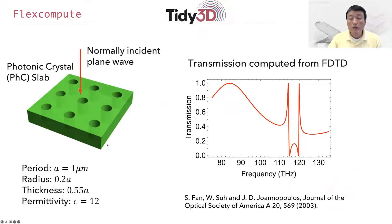The structure is shown here on the left. It consists of a high index dielectric slab with a periodic array of air holes introduced into the slab. The geometric parameters are provided below here. The period is one micron, the radius is 200 nanometer, and the thickness is 550 nanometer. The permittivity of the slab is 12, which roughly corresponds to silicon in the infrared wavelength range.